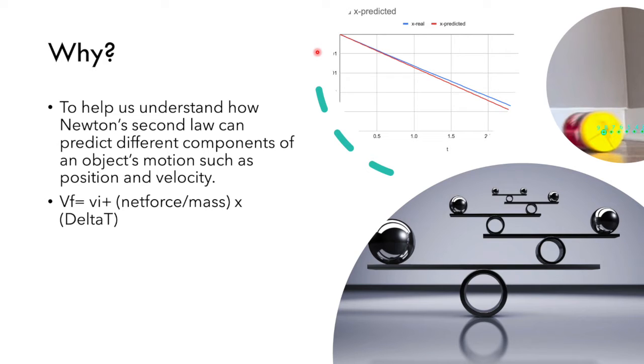We did this to help us understand how Newton's second law can predict different components of an object's motion such as position and velocity. One of the main applications of Newton's second law is to predict future motion, so VF equals VI plus net force over mass times delta T.